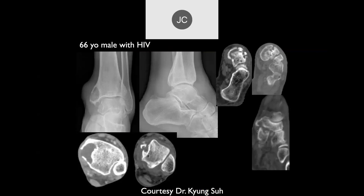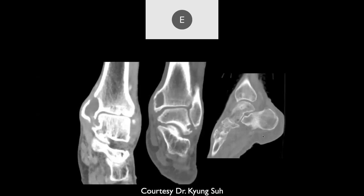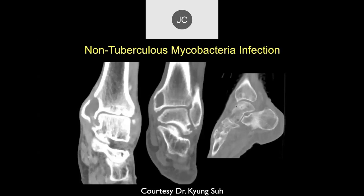A 66-year-old with HIV. Radiographs and CT show lucency in the medial malleolus, bony destruction of the midfoot bones and joint spaces, and focal lucencies in the bones throughout — not as painful as you would expect. This was another case of atypical mycobacterial infection.